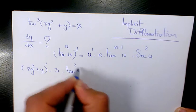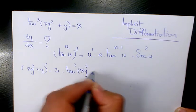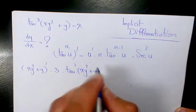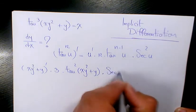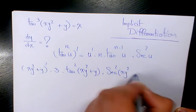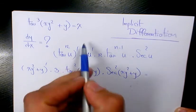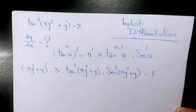times tan to the power of 2 of (xy² + y) times secant squared of (xy² + y) equals the derivative of x with respect to x, which is going to be 1.